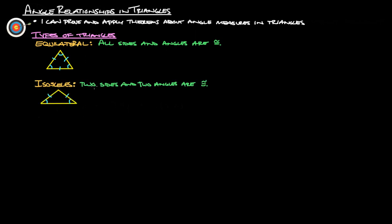We also have isosceles, where two sides and two of the angles are congruent. On an isosceles triangle, these two sides and the angles that are across from each of those sides are going to be the two congruent parts. Across from this side is this angle, across from this side is this angle — so those are going to be the congruent sides.